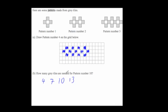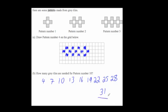To get pattern number 10, the quickest and easiest way would be to carry on the sequence adding 3 each time: 13, 16, 19, 22, 25, 28, 31. So in pattern number 10, there would be 31 grey tiles.